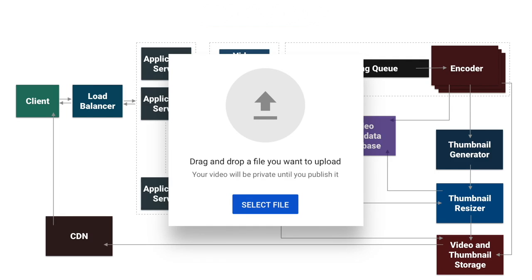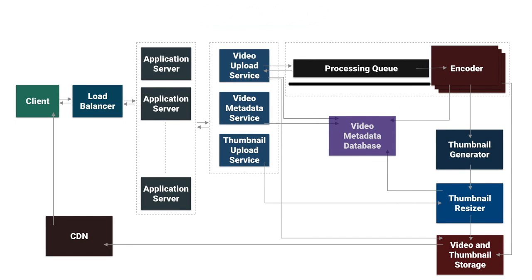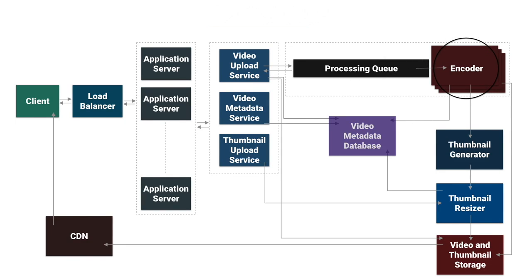Now let's move to a detailed discussion of components. Our first component is video uploading. Whenever we get a video upload request, we store the raw video file in video storage and the metadata — like title, description, user ID, path of the raw video, etc. — in the video metadata table in the database. Then we put that in the processing queue for encoding. Here we have video encoders that keep taking videos from the processing queue based on capacity — you can see we have many encoders.